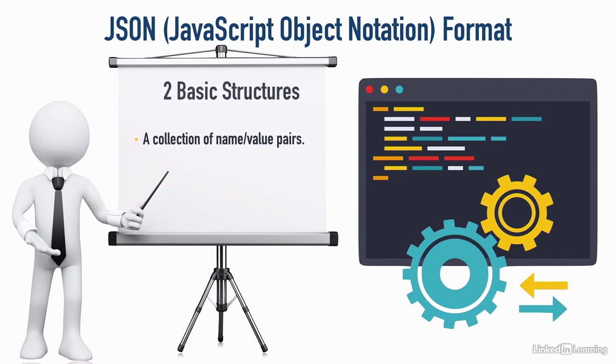The first structure is going to be called an object, and that's a collection of name-value pairs. And we're going to have something else called an array, and that's an ordered list of values. Let's talk about each one of these and be able to recognize these.